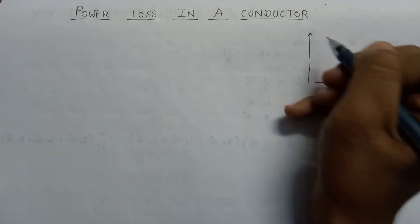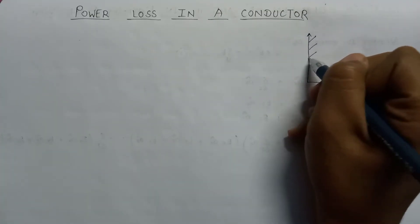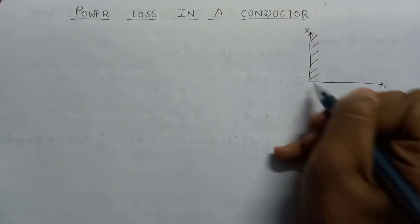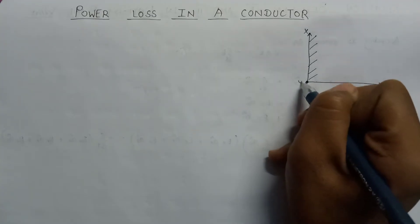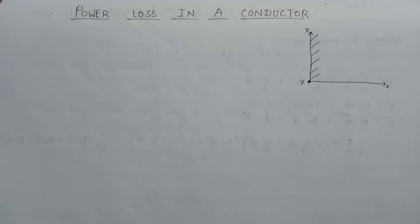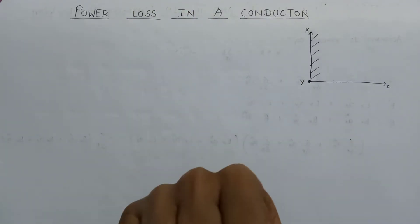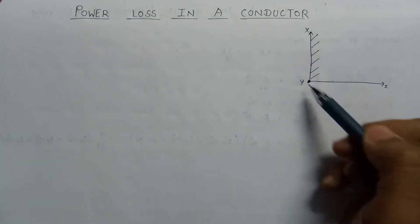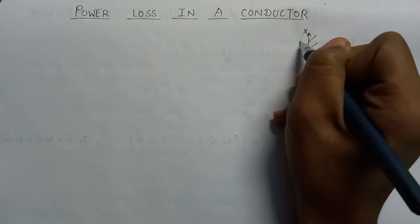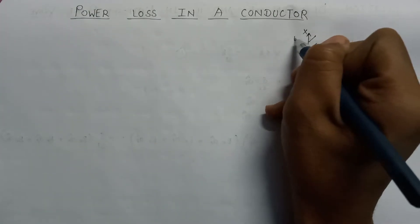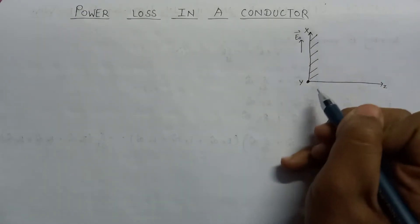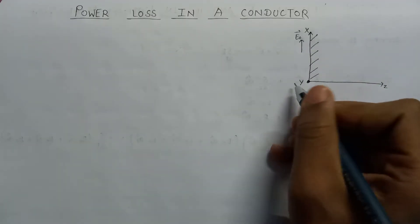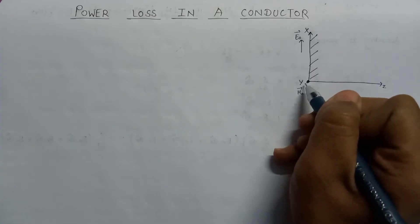The electric field is acting on this conducting surface. This is the x direction, this is the z direction, and the y direction is represented by a dot sign because the y direction is acting out of the paper. The electric field acting on this conducting surface has the component E0 in the x direction, and the magnetic field has the component H0 in the y direction.